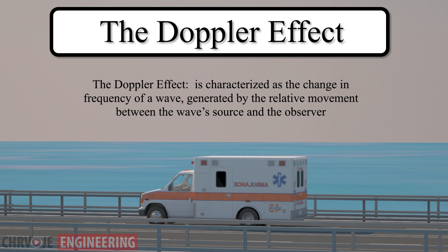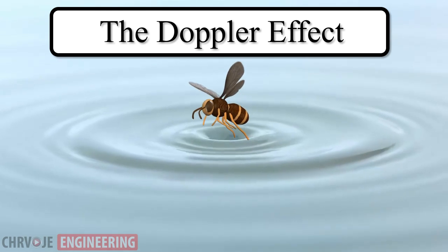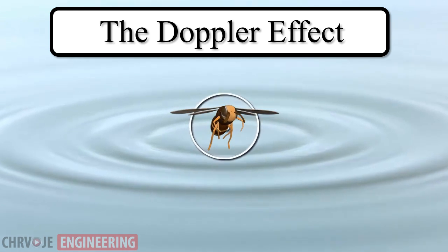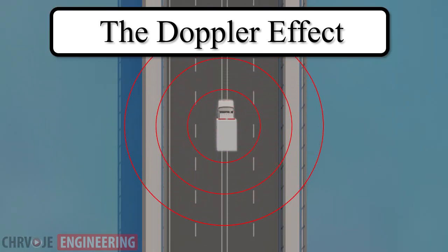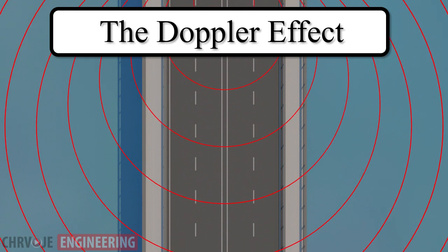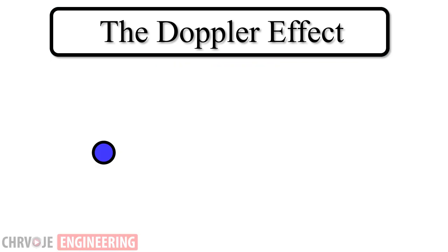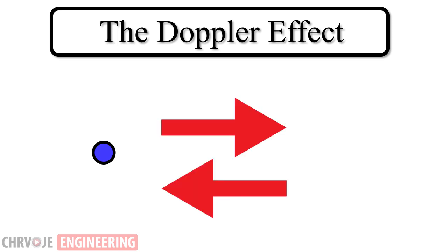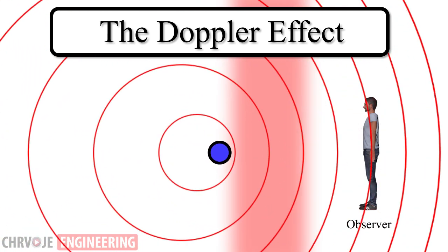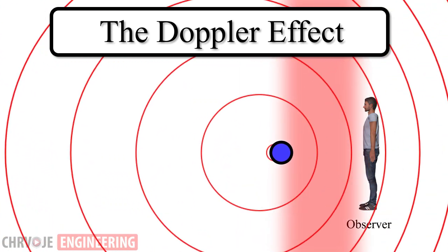The Doppler effect can be noticed with any wave-creating source — waves of water made by a bug moving up and down over the surface of a pond, or sound waves of an alarm of a speeding emergency vehicle. The Doppler effect happens when the object which is emitting the waves moves towards or away from a fixed point or an observer. In front of the object the waves are compressed; behind it the waves are spread out.